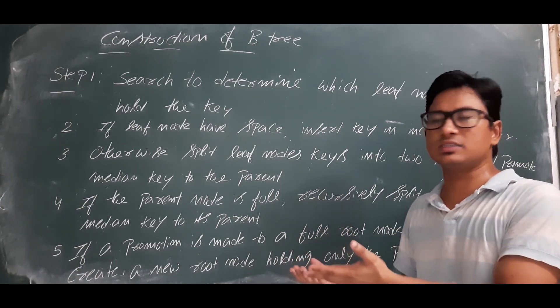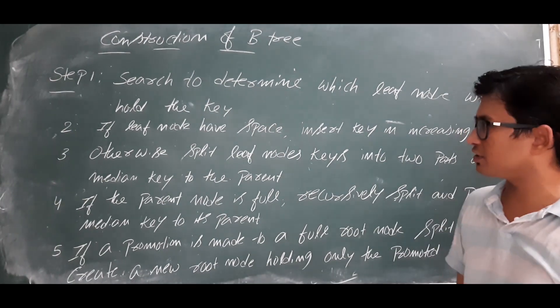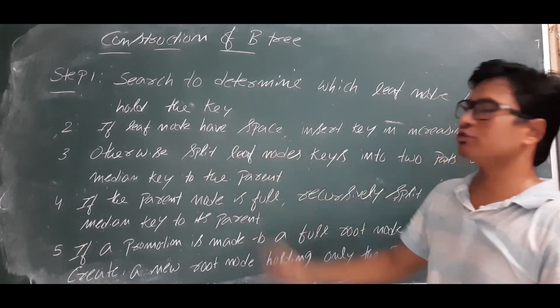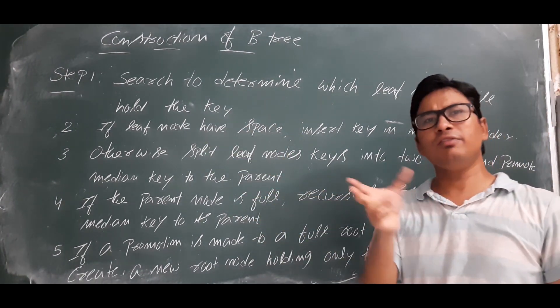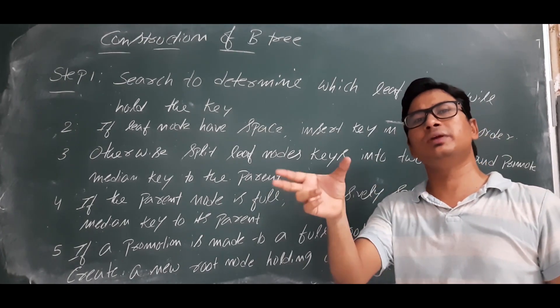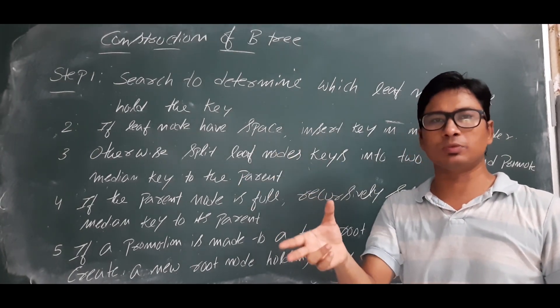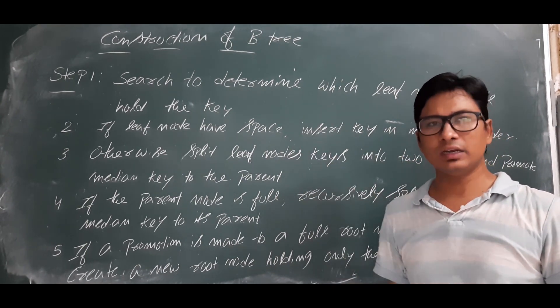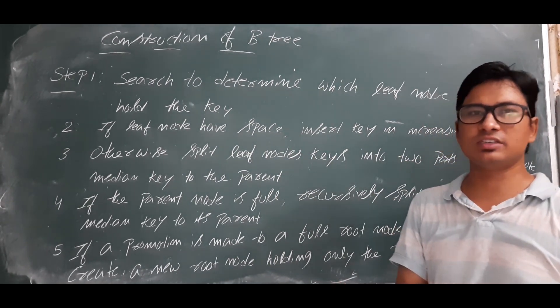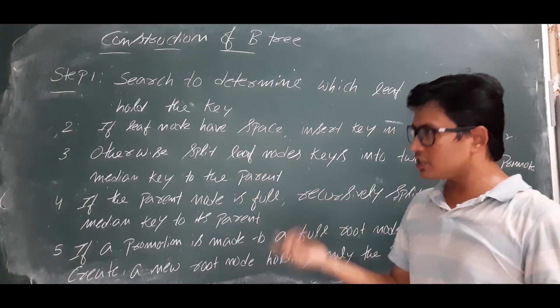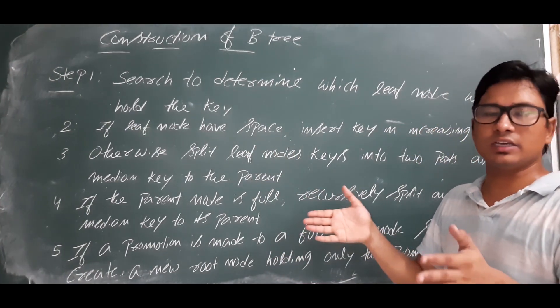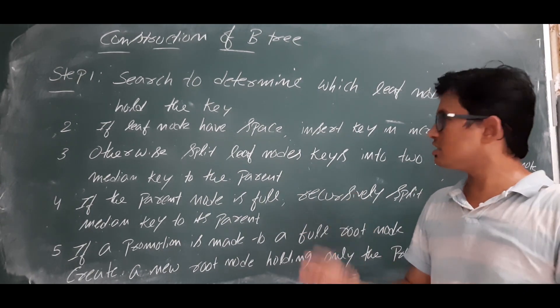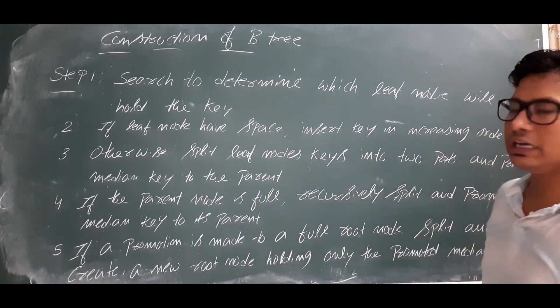Step 2: If the leaf node has space, meaning every node can have a maximum number of keys possible. The leaf nodes will have maximum p minus 1 keys. If there is space, meaning if it can accommodate p minus 1 keys, insert the key in increasing order.